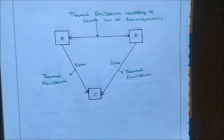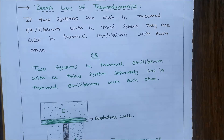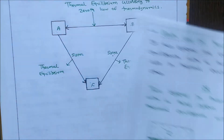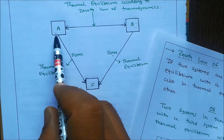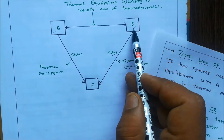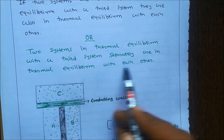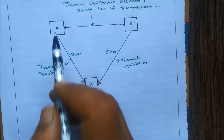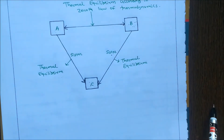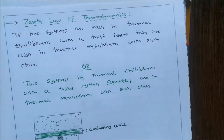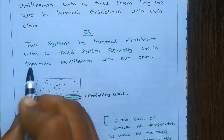Now write the statement of zeroth law of thermodynamics: if two systems are each in thermal equilibrium with a third system, they are also in thermal equilibrium with each other. That is, if system A and system C are in thermal equilibrium, and system B and system C are in thermal equilibrium separately, then system A and system B are also in thermal equilibrium according to the zeroth law of thermodynamics.